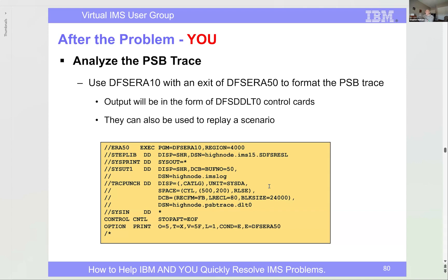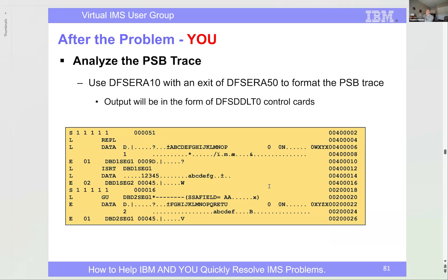If you had the PSB trace on, use DFS ERA10 with exit DFS ERA50, which formats the trace records very nicely. Select the five FOG records using exit routine DFS ERA50 and they go to the TRCPUNCH DD card. The output is every single database call your program issued in DDLT0 control card format — a replace to a relative PCB, an insert with data, a get unique with SSAs visible. Your programmer says they did something; you can fill in the cards and say 'no, you didn't.' Very useful for analyzing database calls.